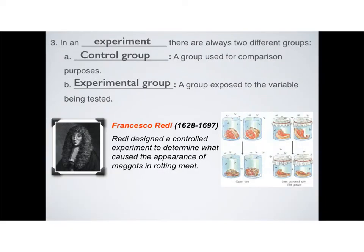In every experiment, there are two different groups. You have control and you have experimental. Control groups are used for comparison. Control groups are the usual everyday condition. Whereas experimental groups, you are changing something, and so you are exposing that group to a different variable or to something that you're actually modifying or changing.